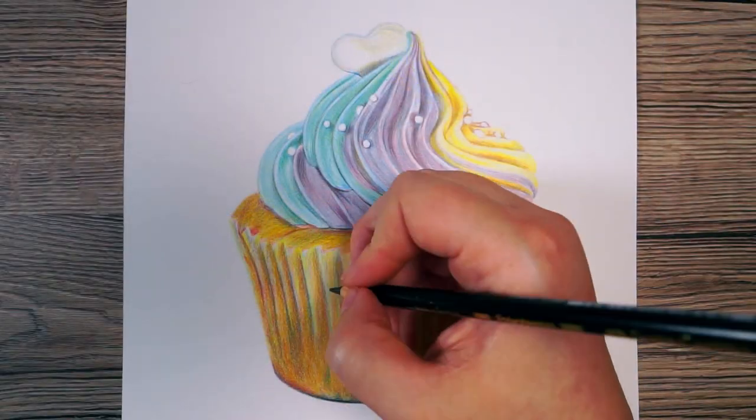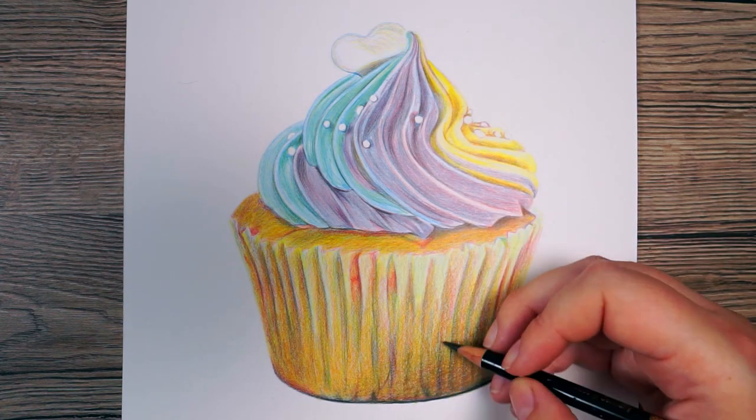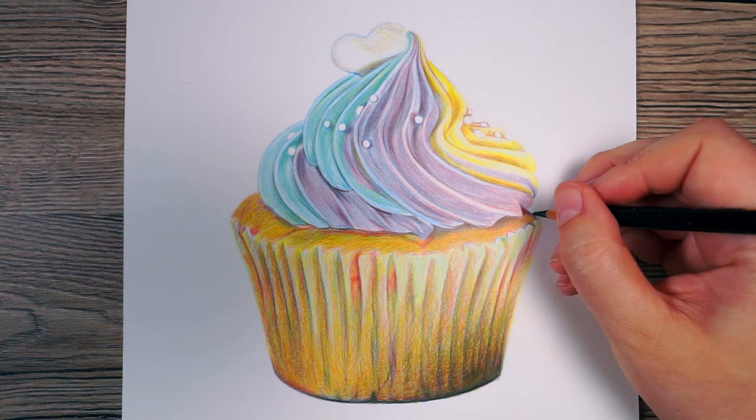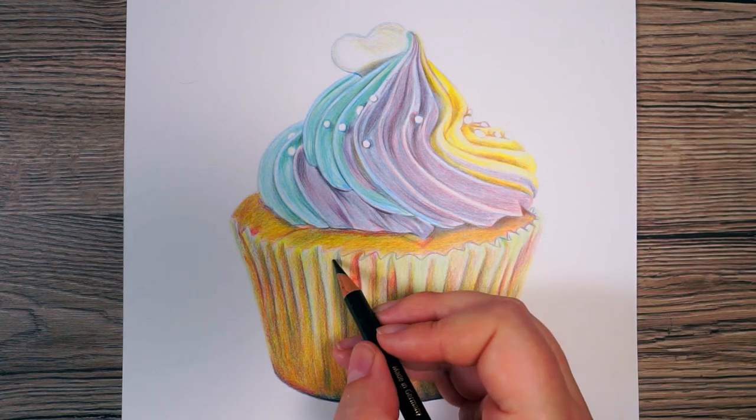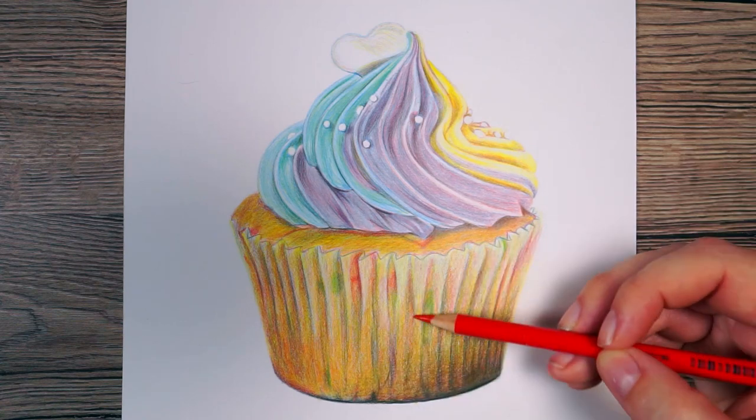Now as I mentioned, the white polychromos pencil is really only useful for blending once I've put the color down. I can't use it over the top to add white back in, so I did decide to almost cheat a little bit at this point.